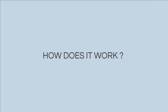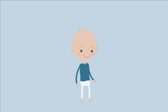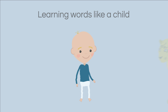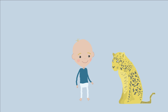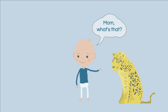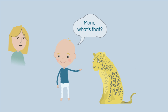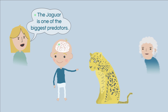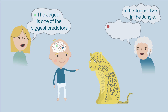So, how does it work? With Cortical.io's approach, the computer learns like a human. When we teach a child a new word, we do this by giving an explanation that features a set of comprehensive context words. For example: the jaguar is one of the biggest predators living in the jungles of South America.